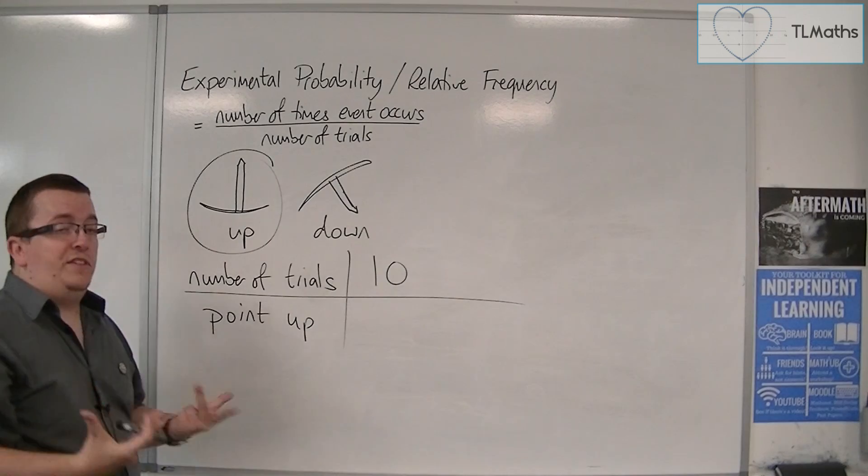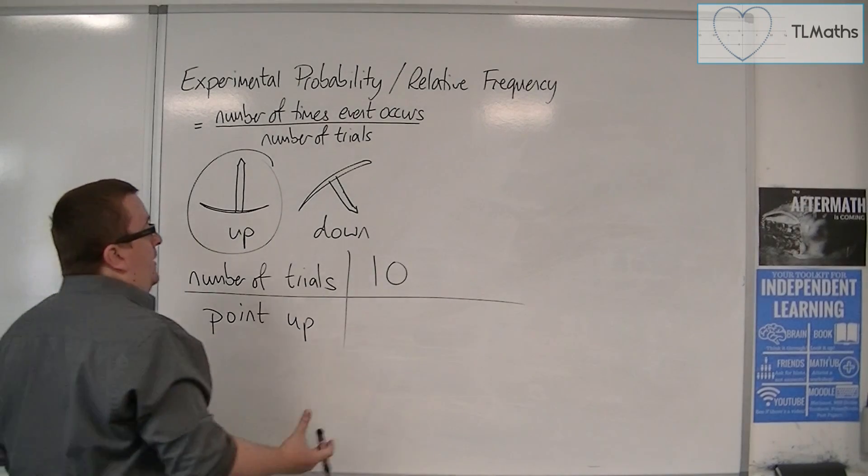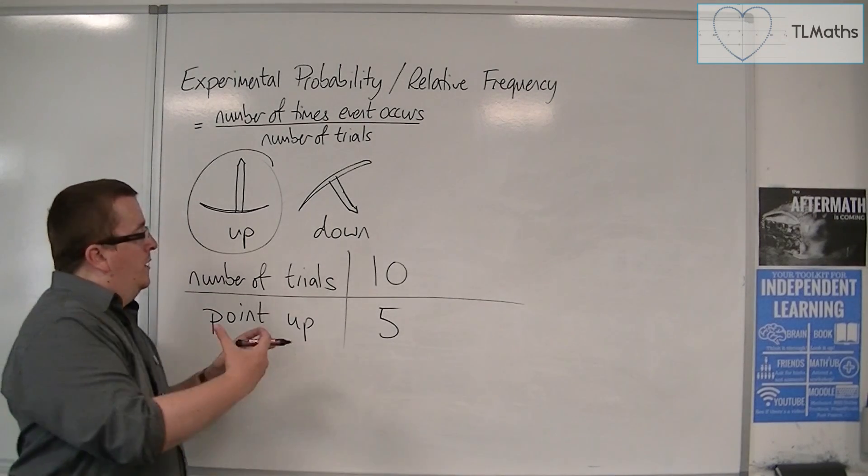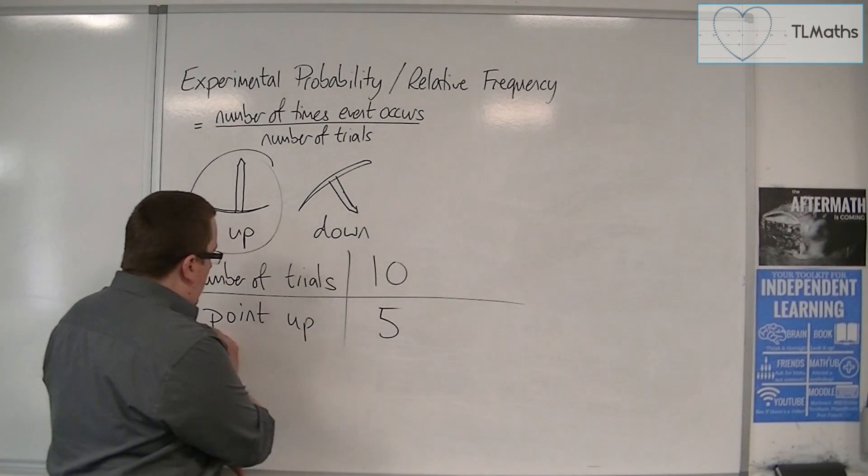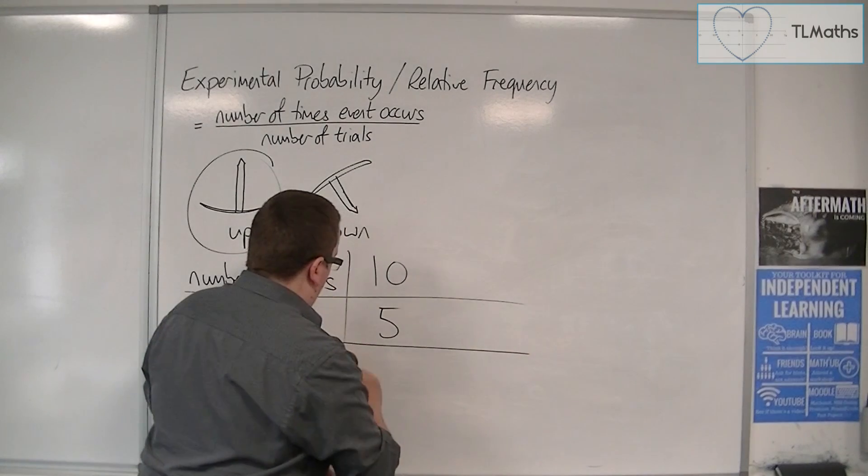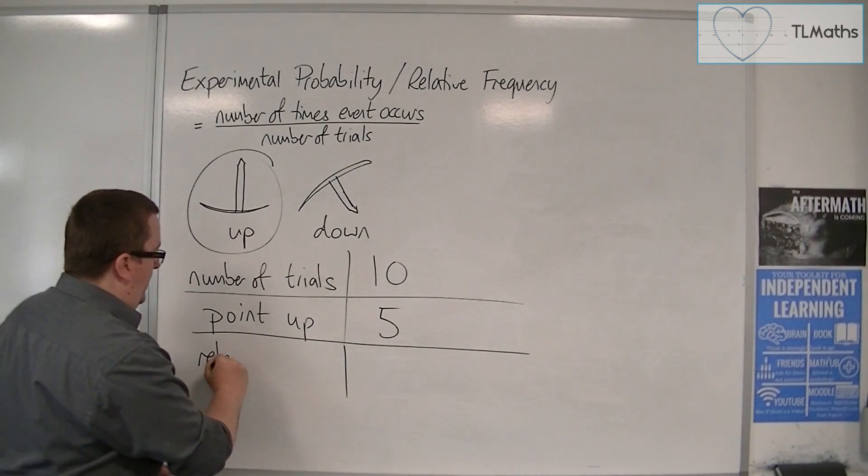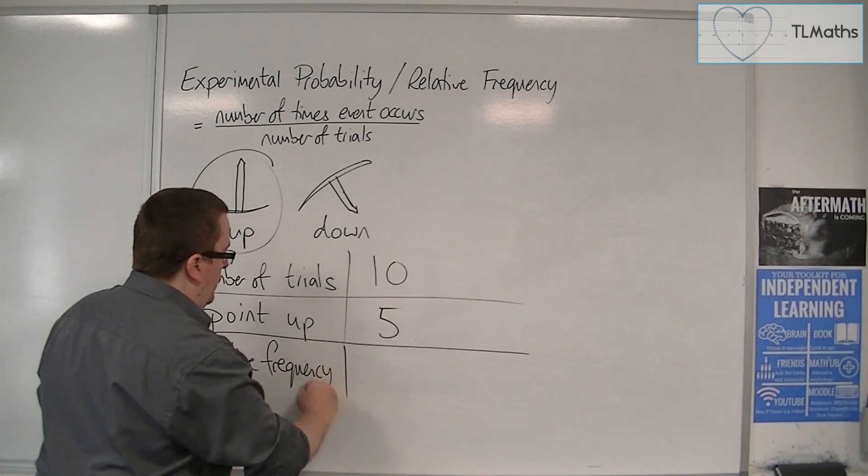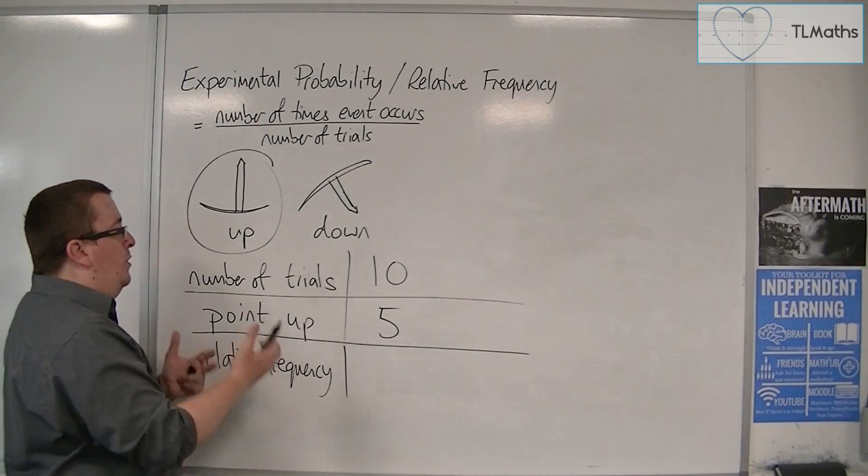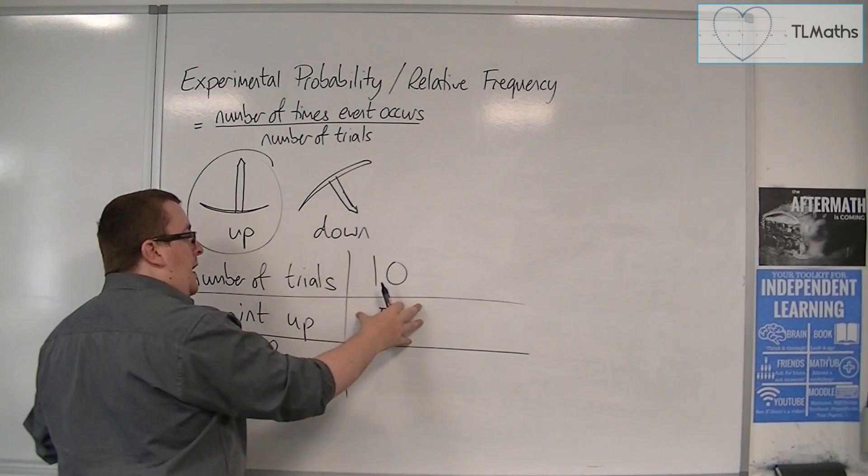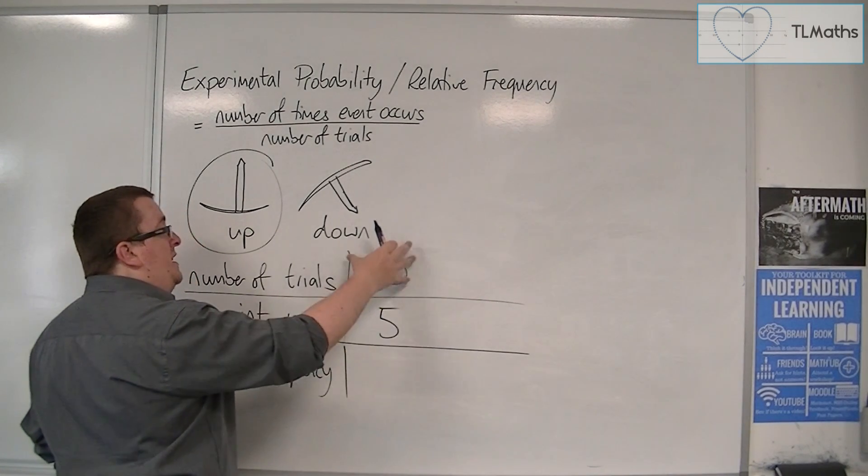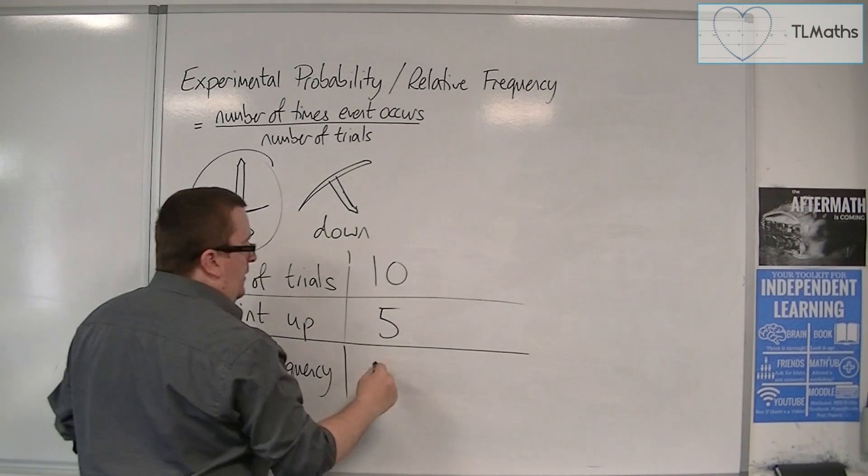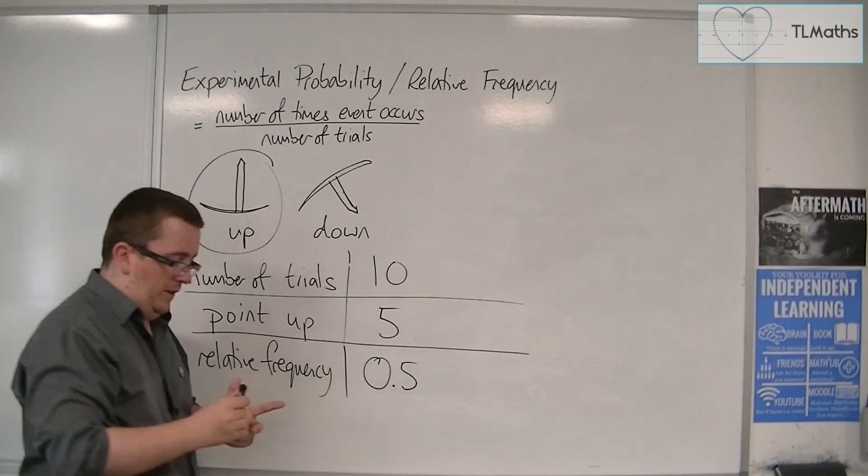Point up. So, let's say that out of the ten times, I've found that it's landed point up five times. Now, from that, I can then calculate a relative frequency, or an experimental probability. So, the relative frequency would be the number of times it's appeared as point up, divided by the number of trials. Five divided by ten. And so, that would be just 0.5.